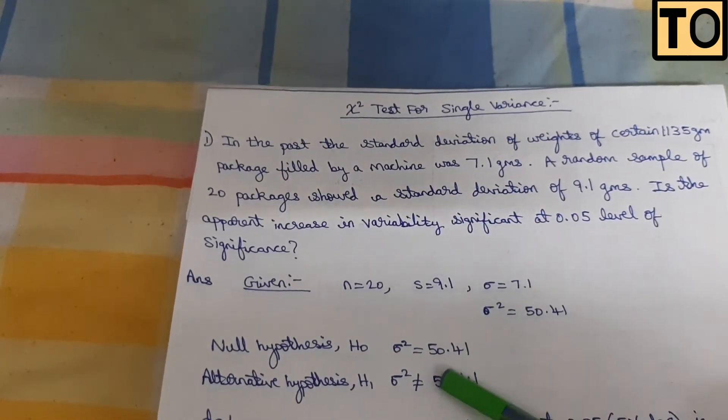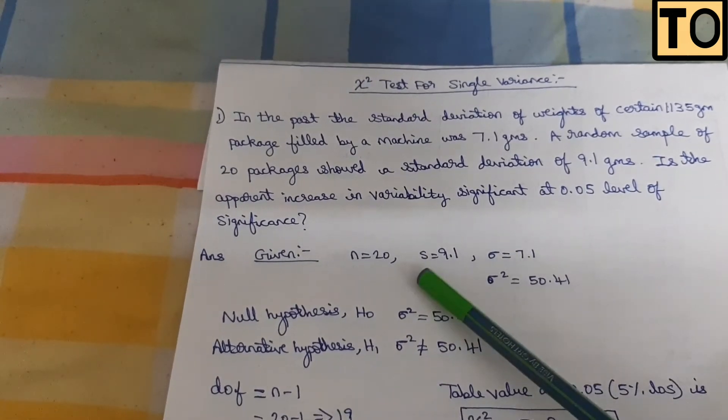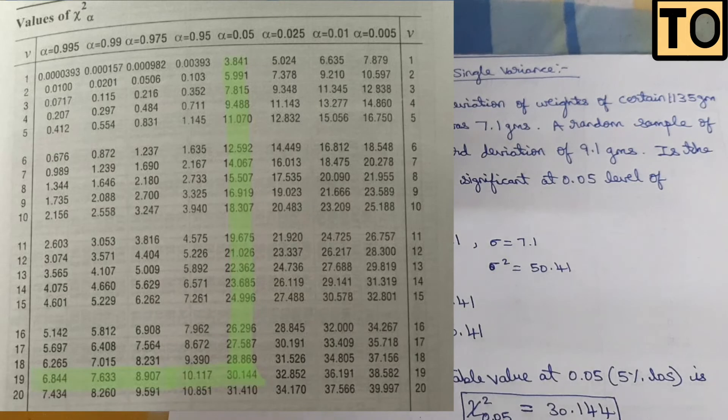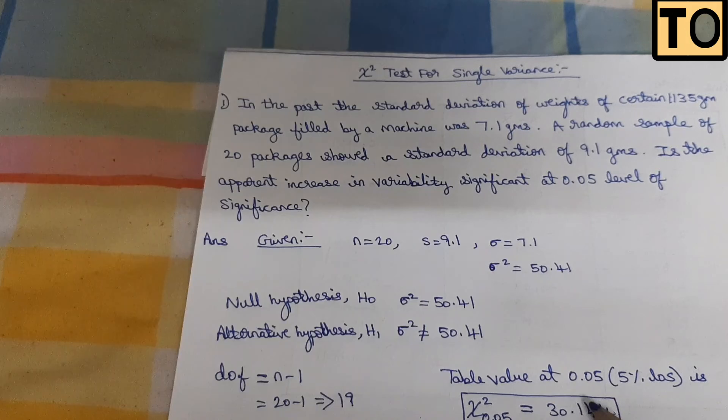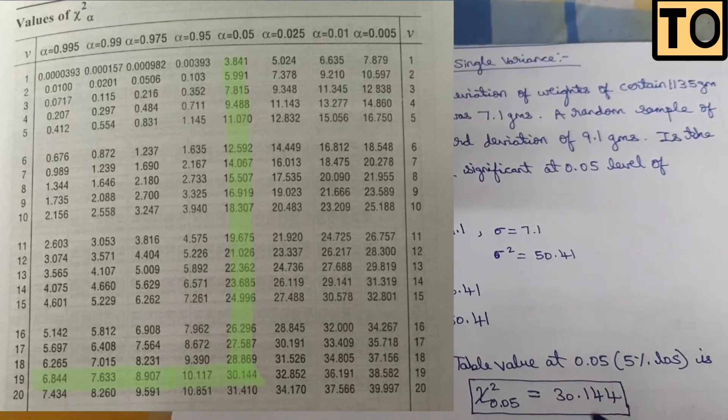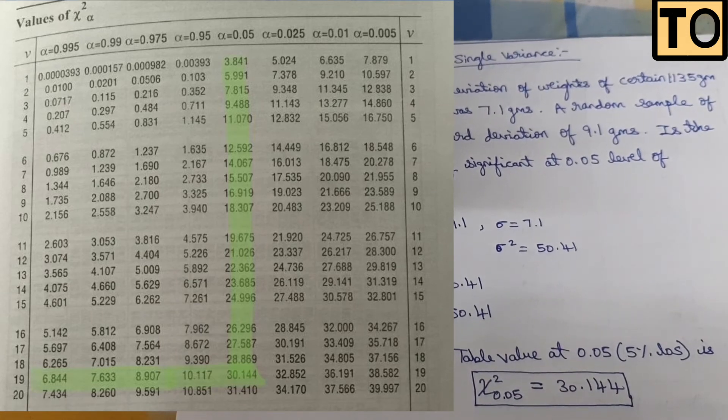Now we find the table value at n minus 1, which is 20 minus 1 equals 19 degrees of freedom. The table value is 30.144 at 5% significance level.